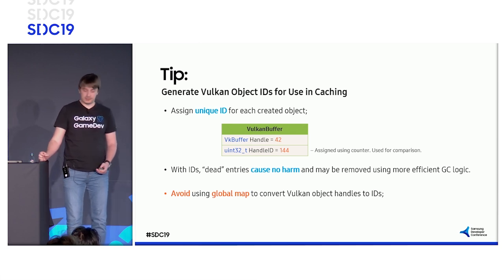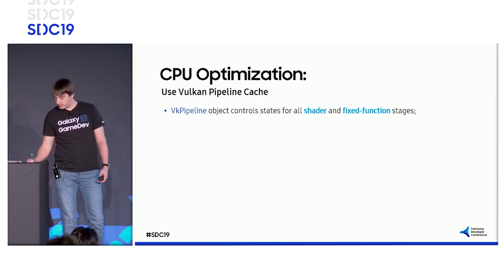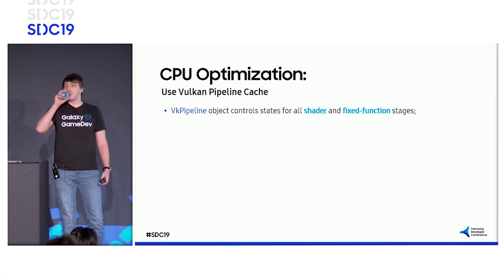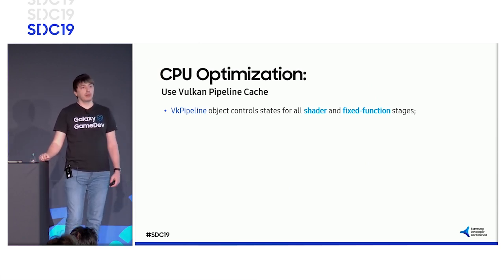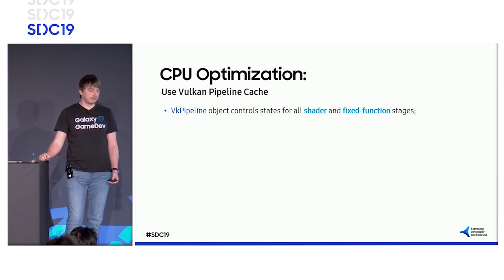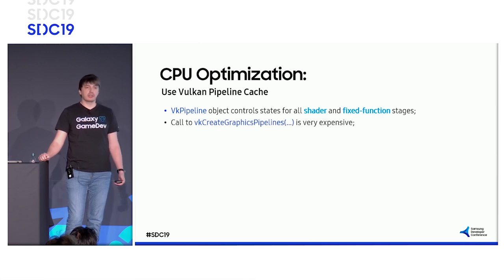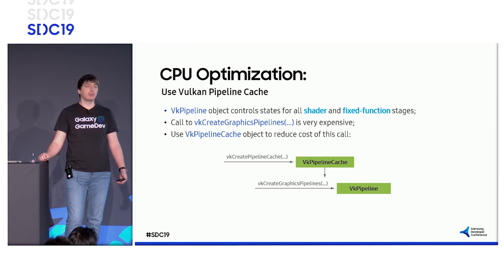Now let's talk about Vulkan pipelines. A pipeline is a complex object that describes how primitives should be rendered, including shaders. However, creating a pipeline object is very expensive. So to improve performance, you need to create and use the pipeline cache.